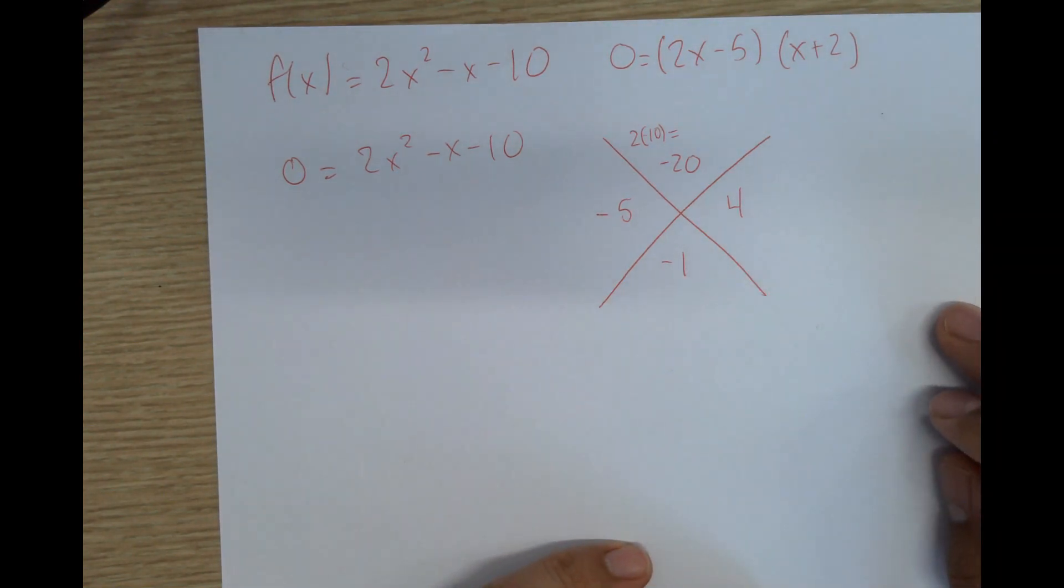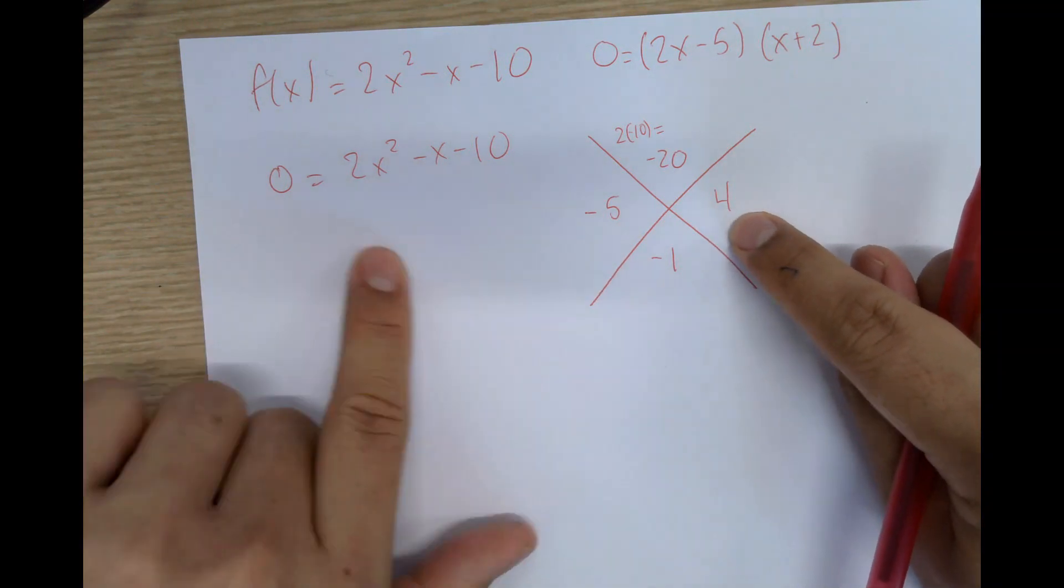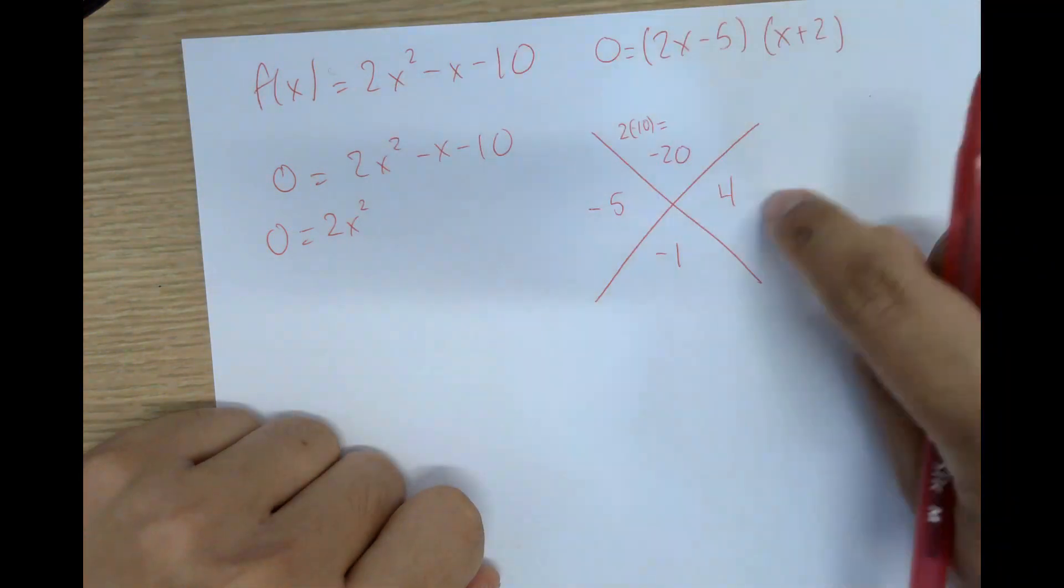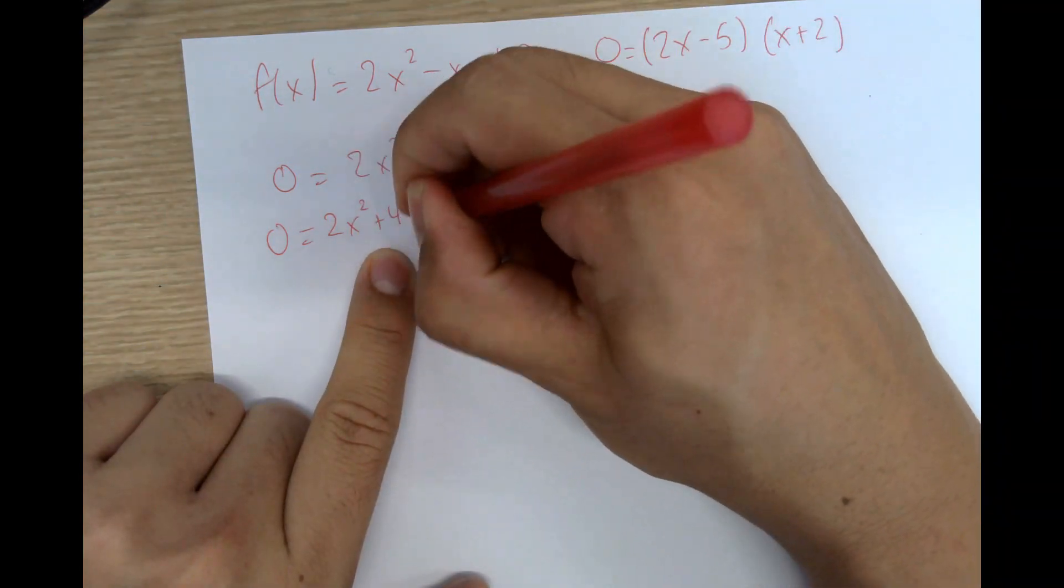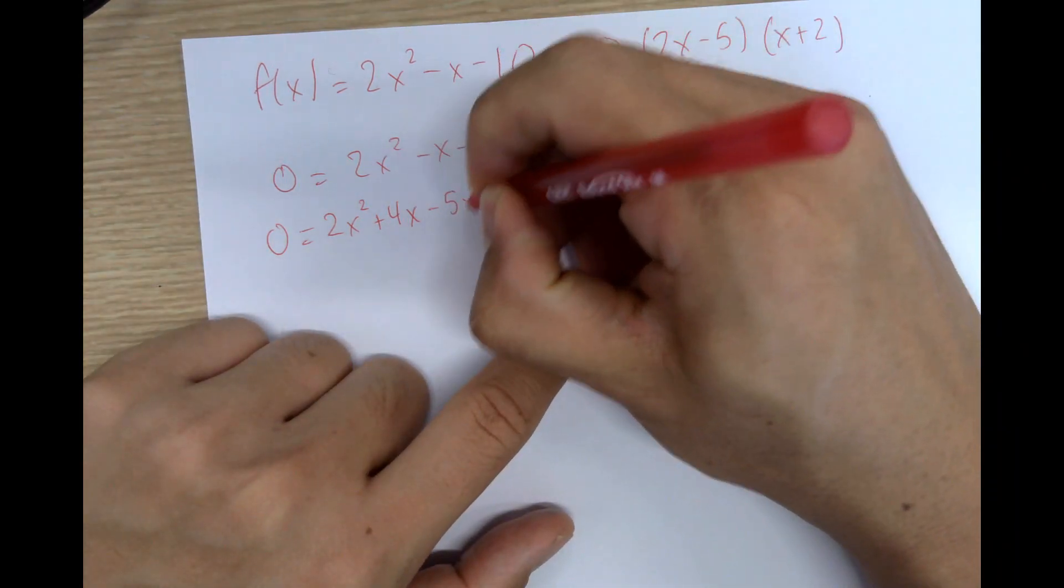Okay, so this part is the intuitive part. We're going to write it as 0 equals 2x squared. We're going to use this 4 and change it to plus 4x. We're going to take this -5 and change it to -5x minus 10.